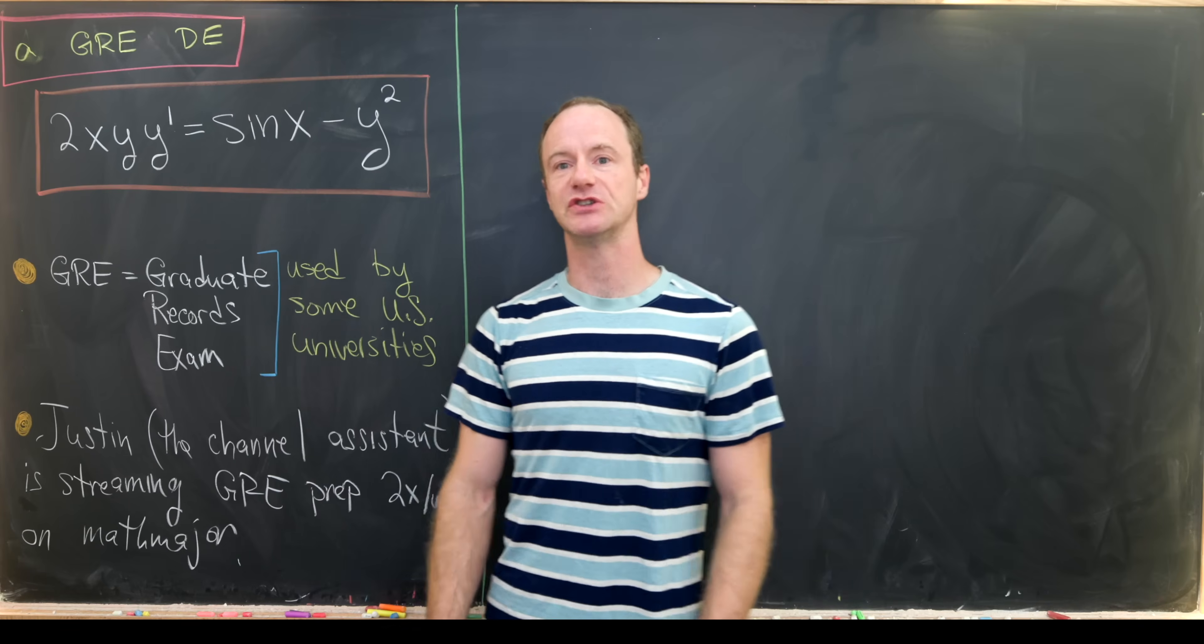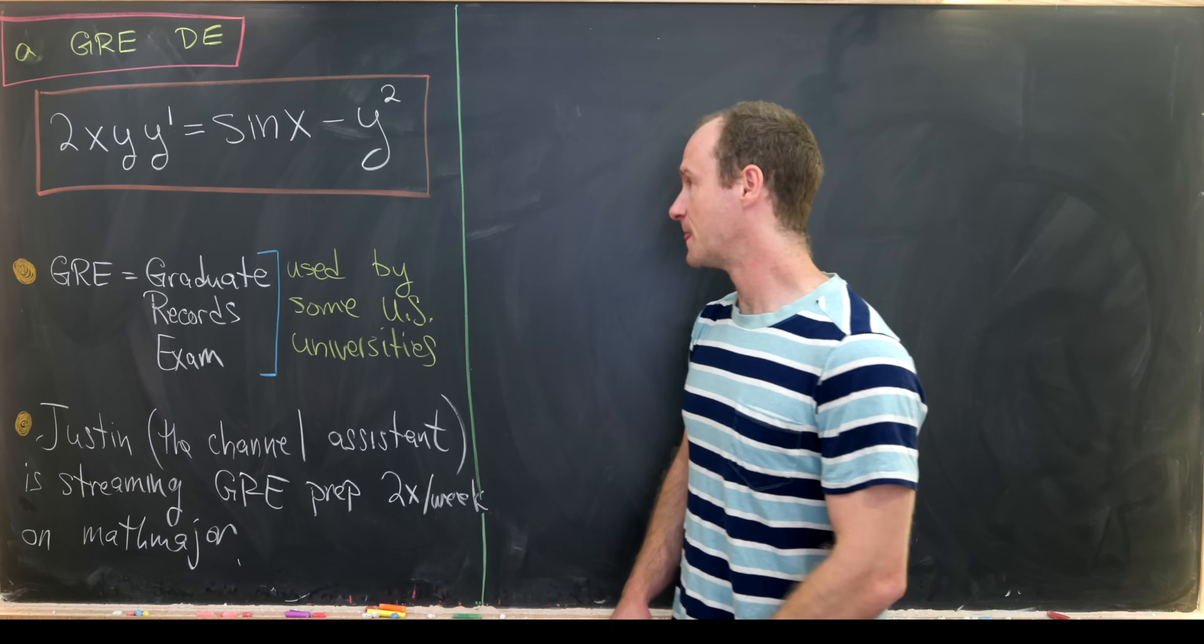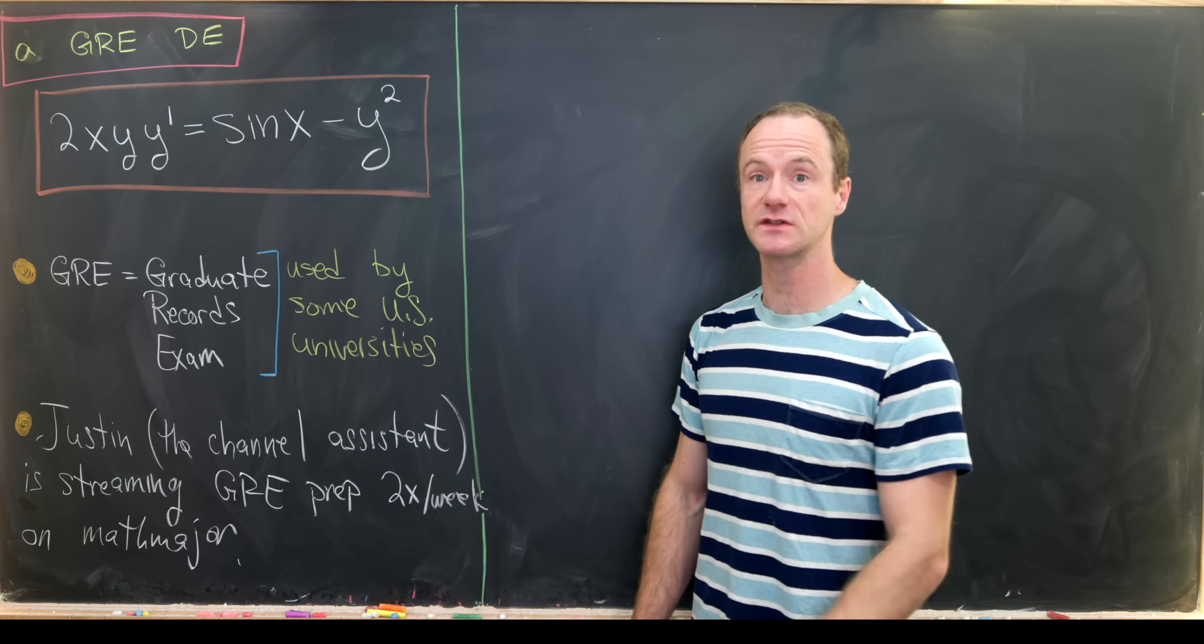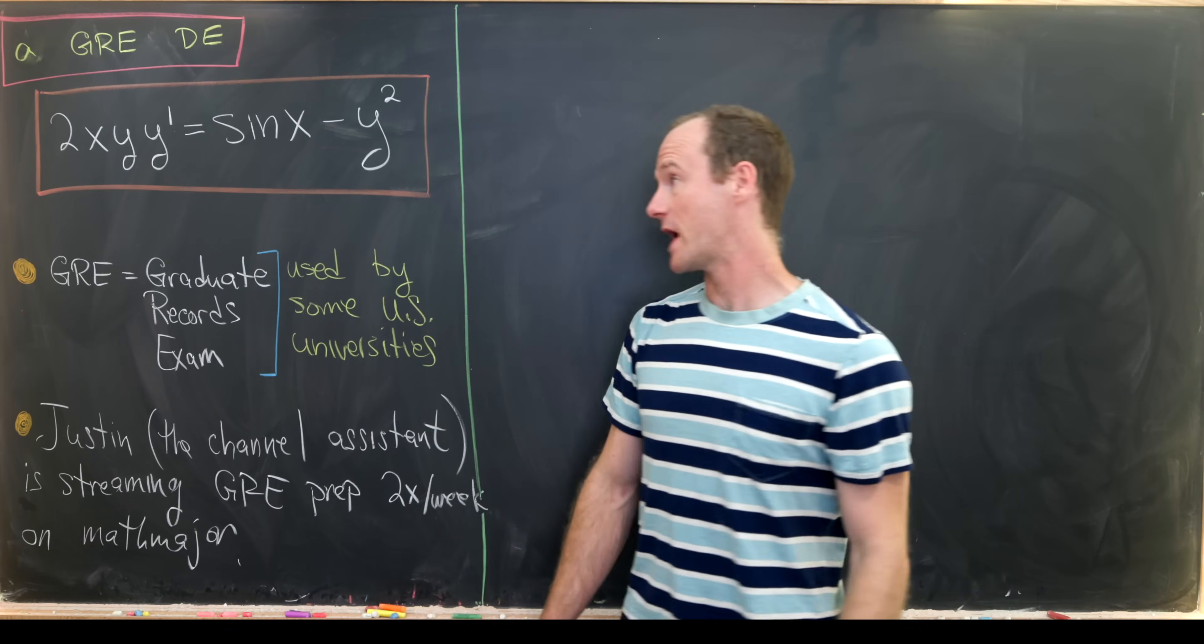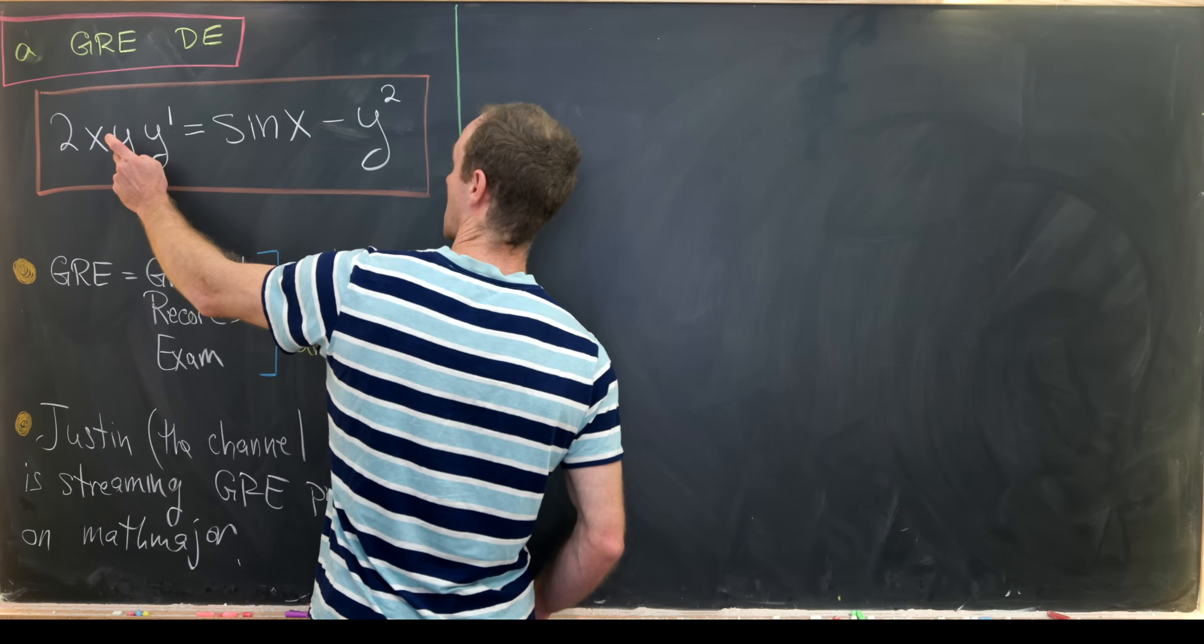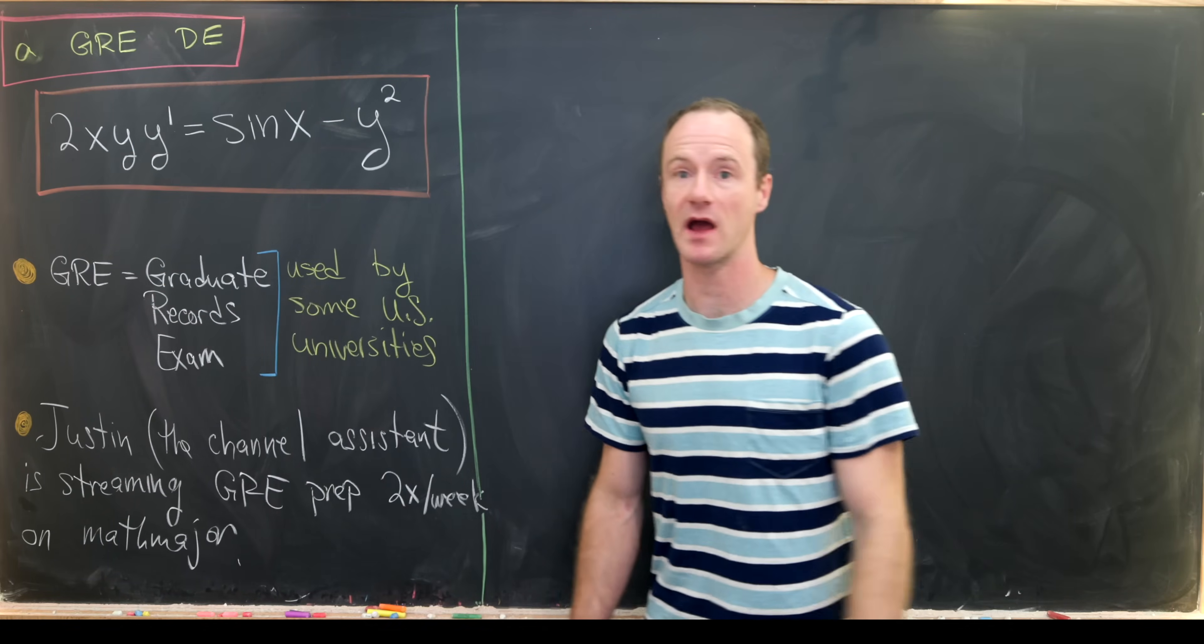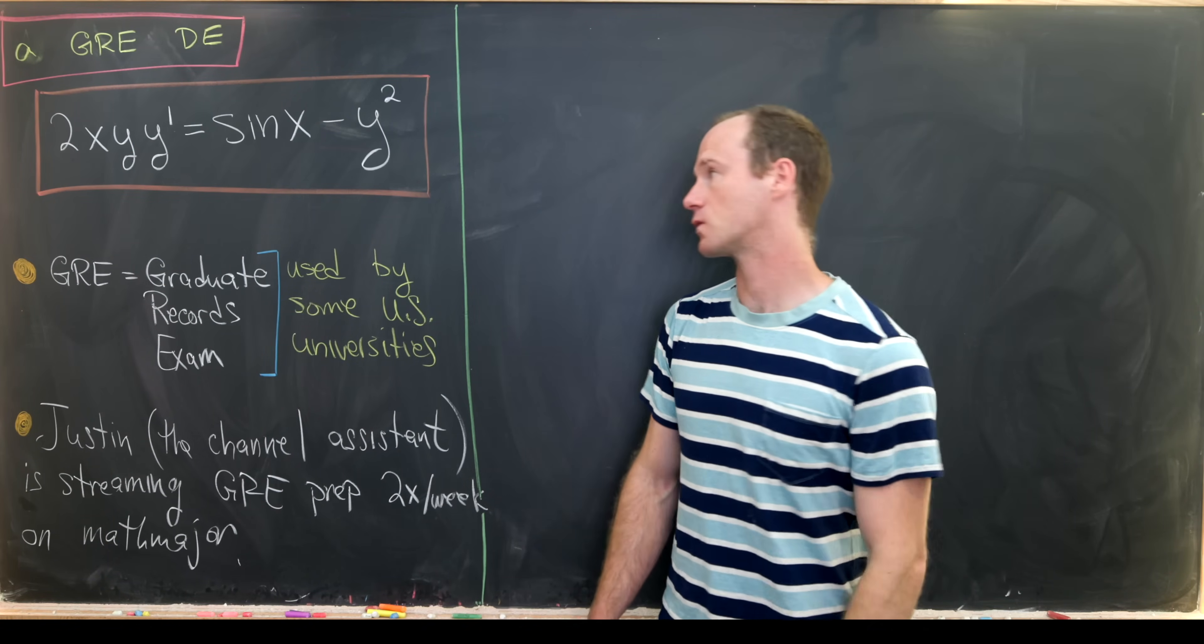So immediately we should start looking for a trick. And I think if you look pretty closely you can see one, and that is the derivative of y squared is equal to 2 times y times y prime with the chain rule.